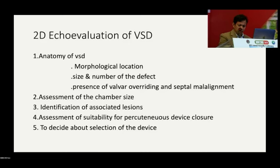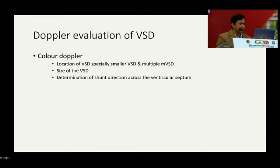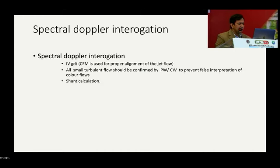With color Doppler echocardiography, we assess the location of VSD — especially smaller and multiple muscular VSDs — and the size and shunt direction across the ventricular septum. With spectral Doppler we measure the interventricular septal gradient. All small turbulent flows shown by color flow mapping should be confirmed by pulsed wave and continuous wave Doppler to prevent false interpretation and to calculate the shunt.